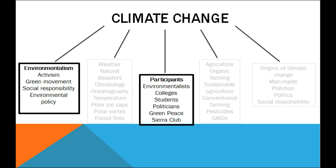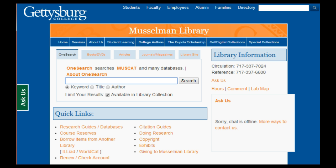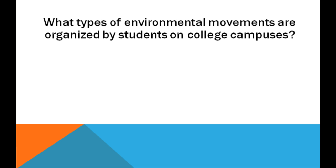For this example, let's say you decide to focus on what types of environmental movements are organized by students on college campuses. What are your next steps? Instead of plugging that entire research topic into a search box, take a few moments to ponder possible keywords that describe your research question. Concept maps are great for this. What are the main themes in this research question? Environmental movements, students, and colleges.